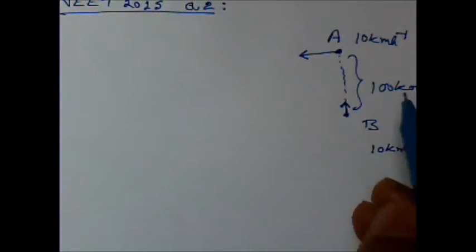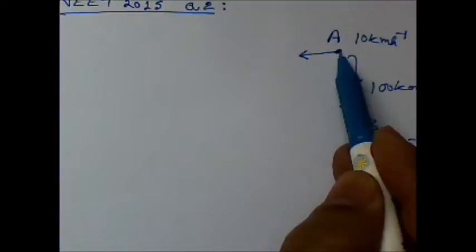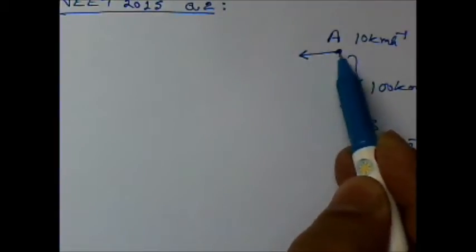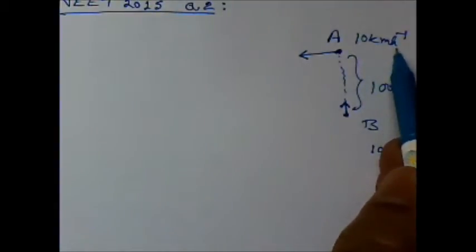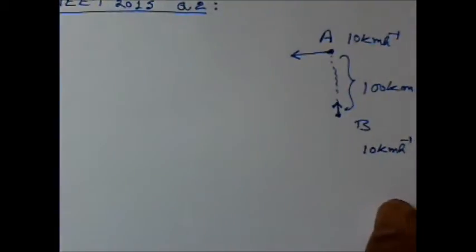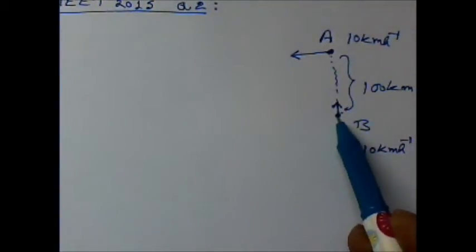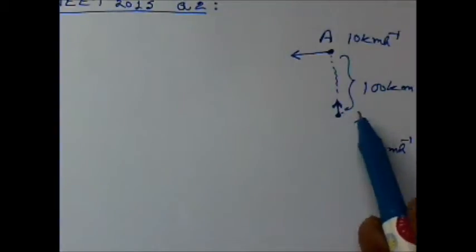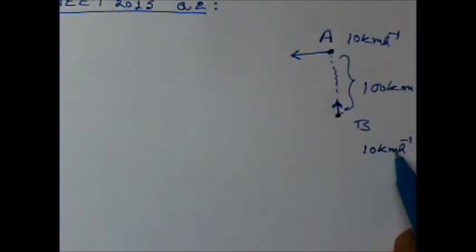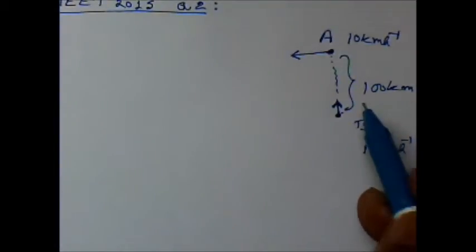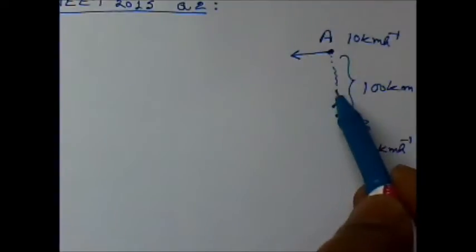In this question, ship A is moving westward with speed of 10 kilometers per hour and ship B is initially 100 kilometers away and is moving northward at the same speed, 10 kilometers per hour. Now we have to find the time after which the distance between them is minimum.